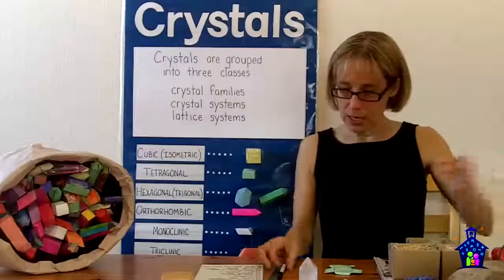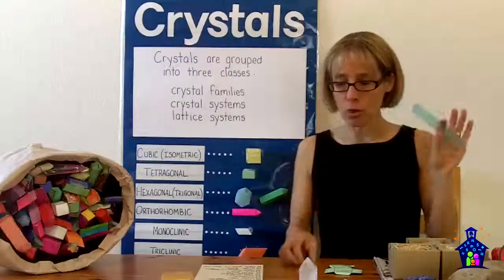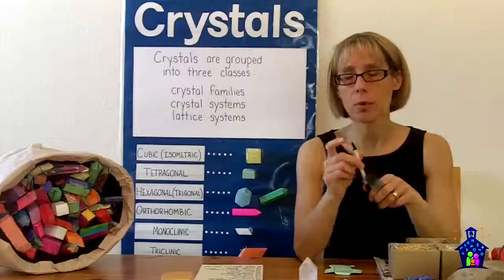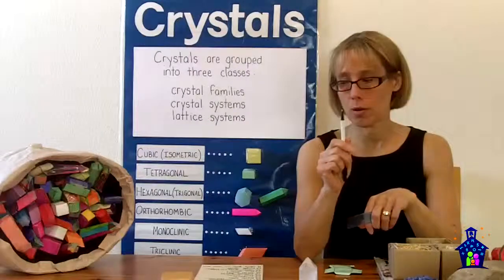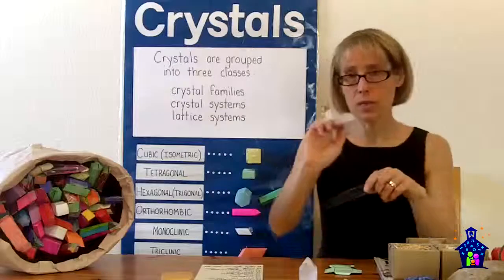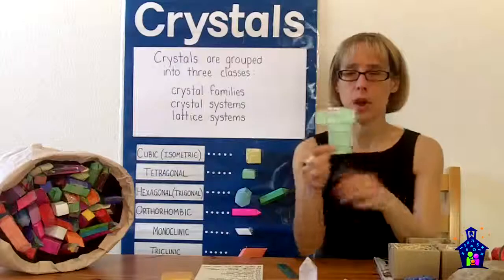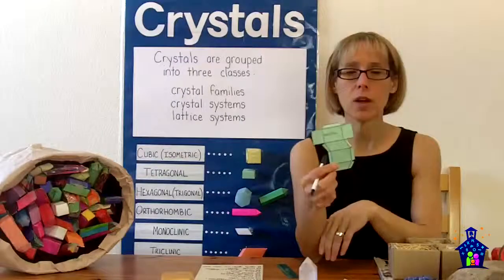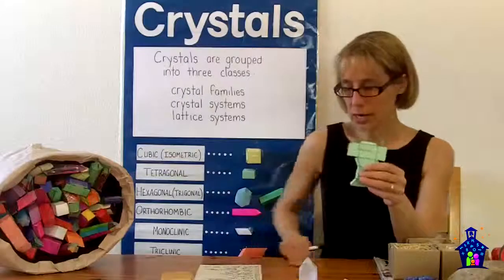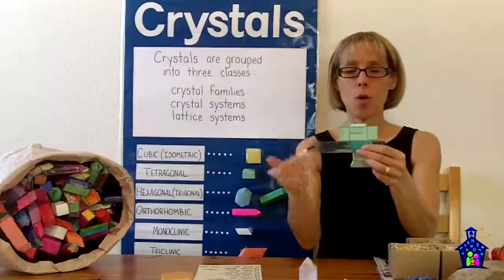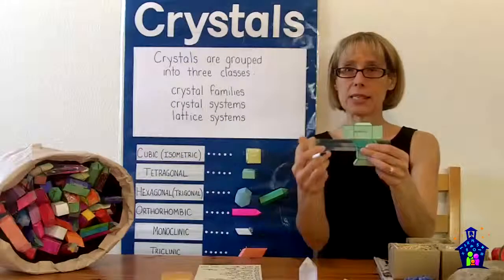You're also going to need a ruler and ballpoint pens. And the ballpoint part is important because we want that to be really firm there. And where this comes in is after they have colored in their crystal, and obviously that one's not colored in, but after they've colored in their crystal then they're going to take the ruler and they're going to go over all of those black lines that they see there.